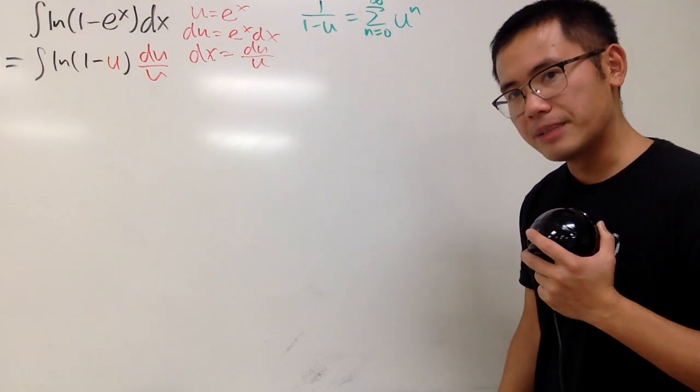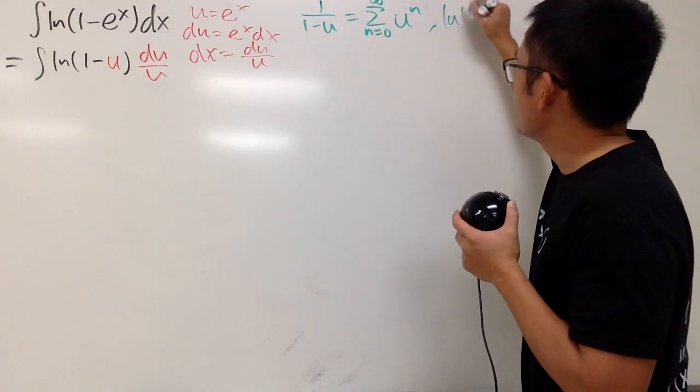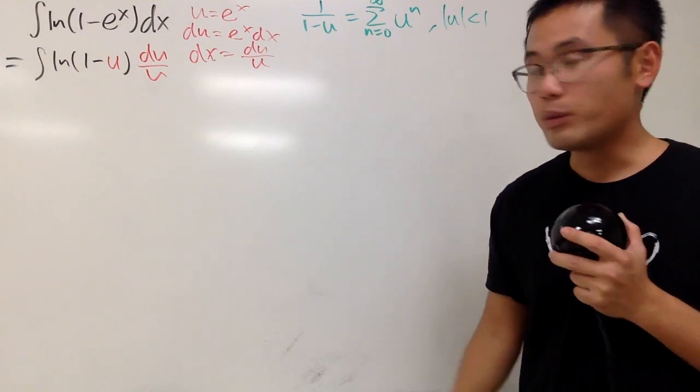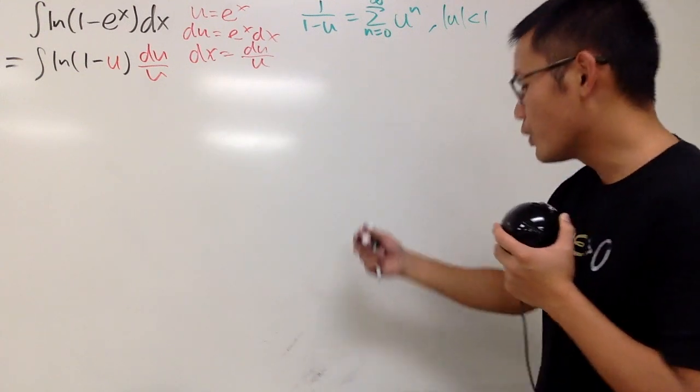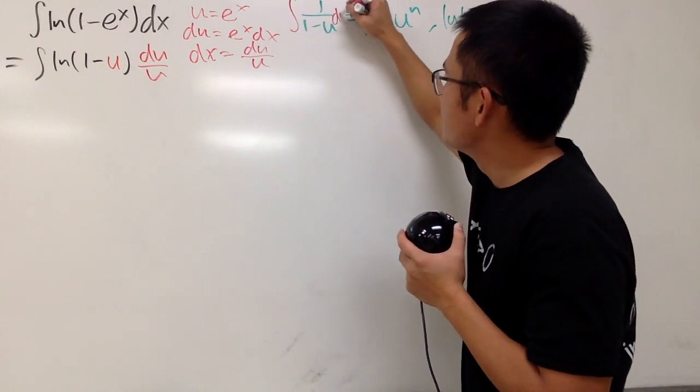But unfortunately, our best friend has some limitation. Namely, absolute value of u has to be less than 1. Well, I need to get to ln though. Don't worry. Just integrate both sides.